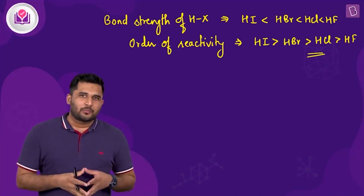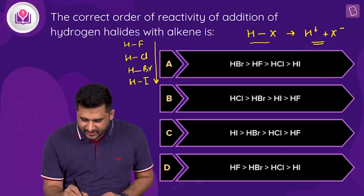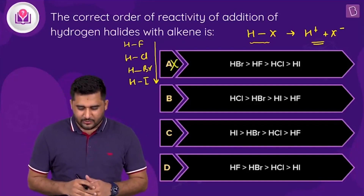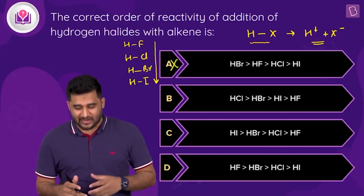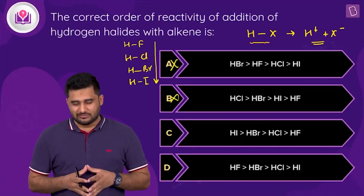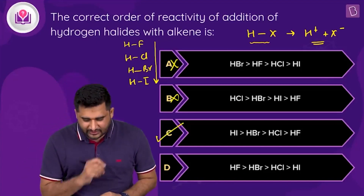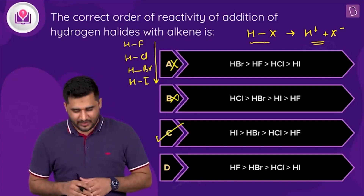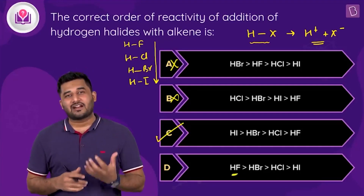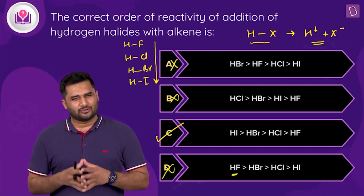Matching with options: Option A says HBr has maximum reactivity — not right. Option B says HCl has maximum reactivity — not right. Option C gives HI > HBr > HCl > HF as the order, which is exactly what we derived. Option D says HF has maximum reactivity — not right. The correct answer is Option C.